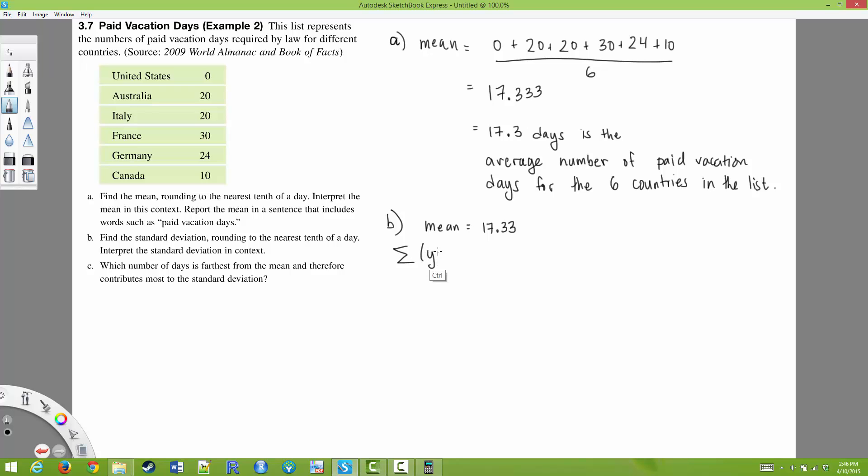So to find the standard deviation, we have to take each value and subtract off the mean value and we square them. And when we add them up, we divide by n minus one and we take the square root. This is the definition of the standard deviation.